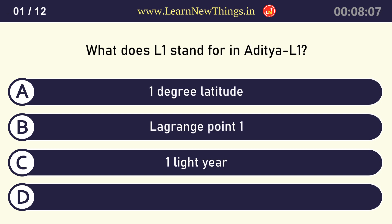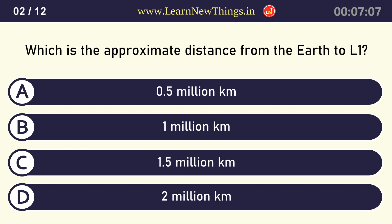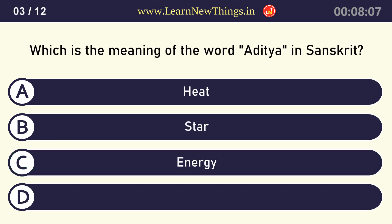What does L1 stand for in Aditya L1? Lagrange Point 1. Which is the approximate distance from the Earth to L1? 1.5 million kilometers. Which is the meaning of the word Aditya in Sanskrit? Sun.